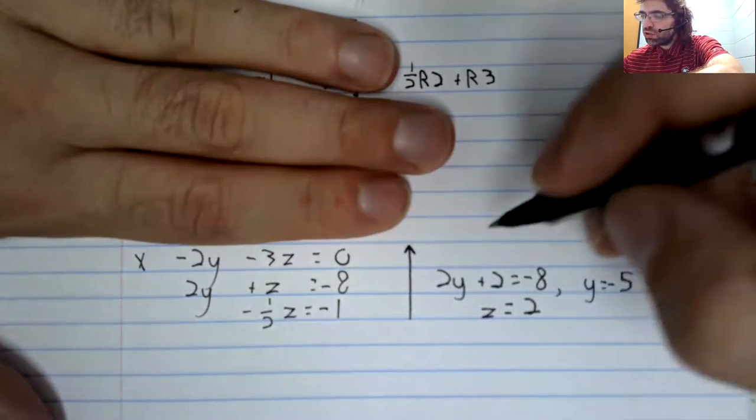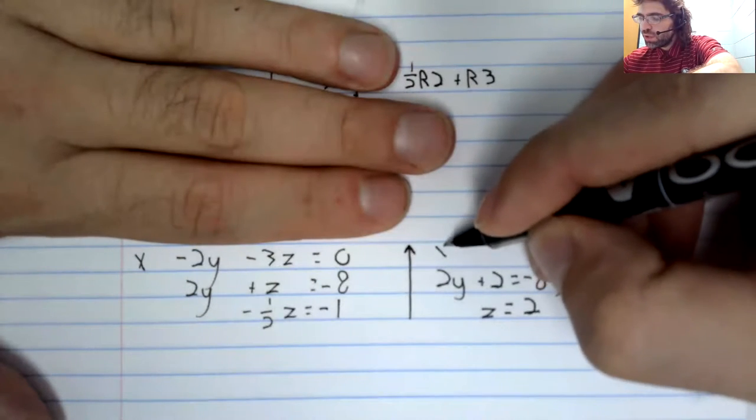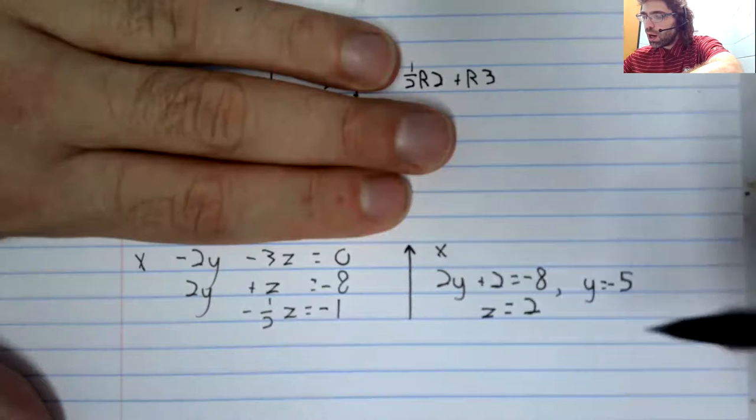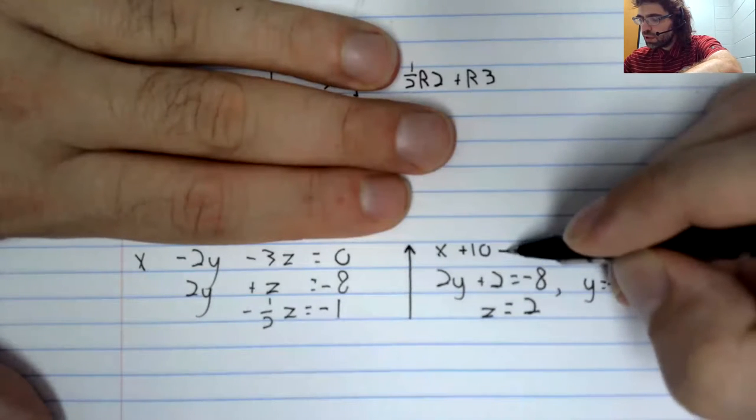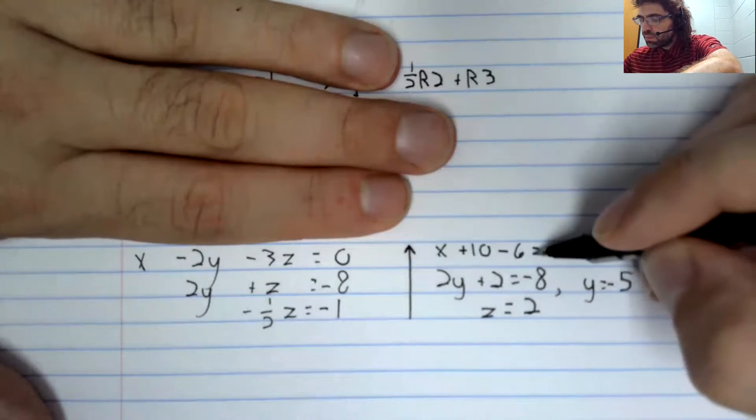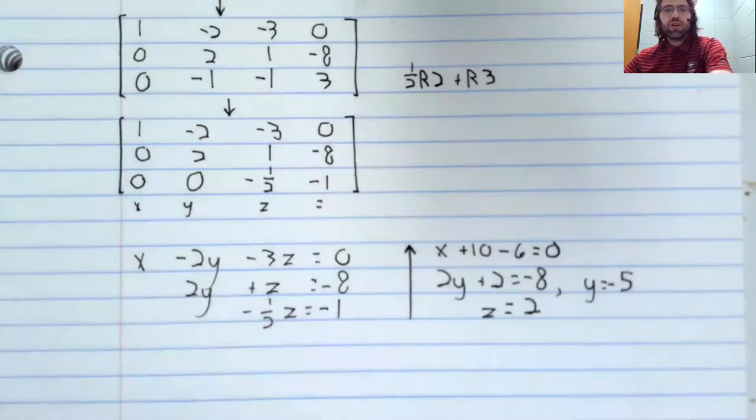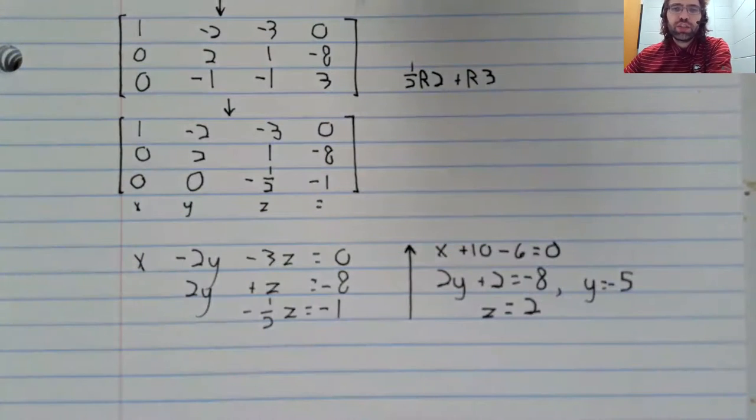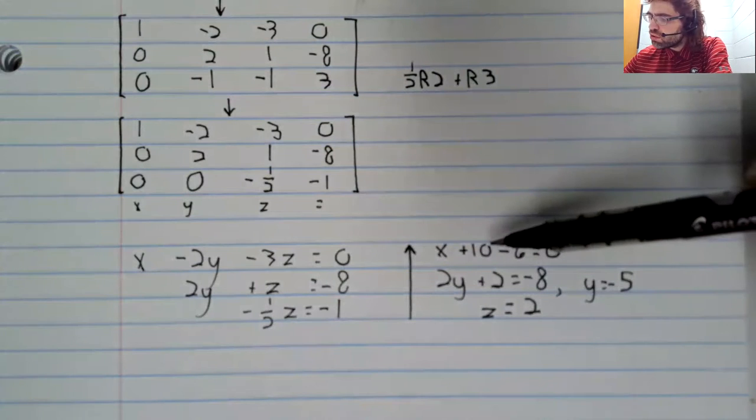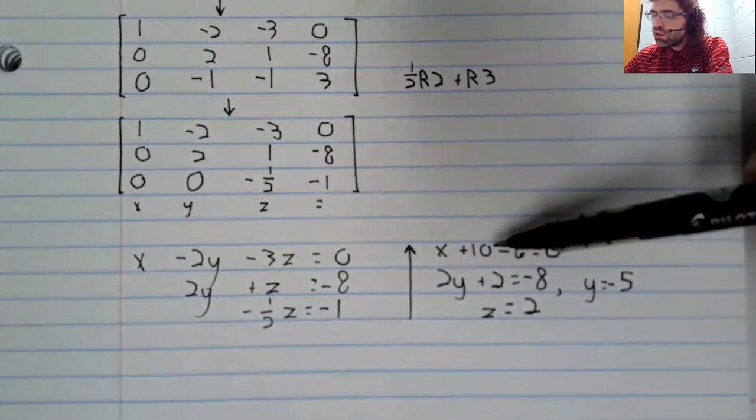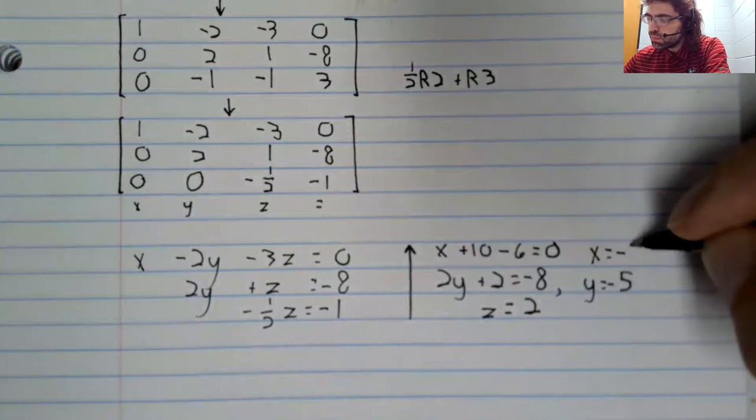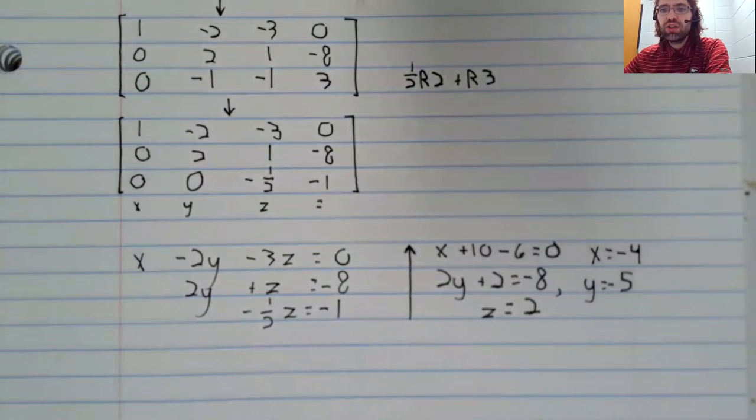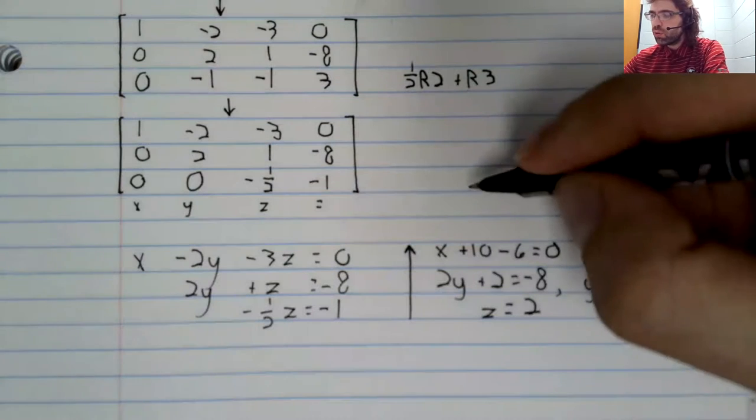Now this first equation, we know what y is. So this first equation can be written to only involve x: x plus four equals zero, x equals negative four.